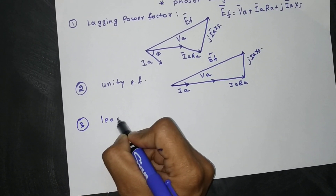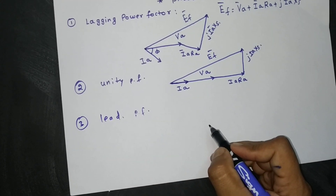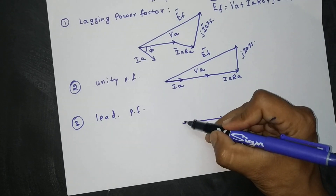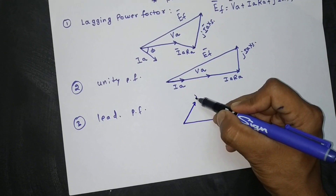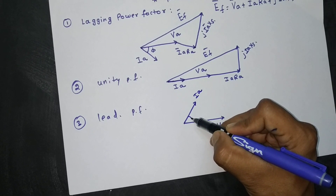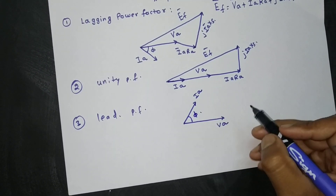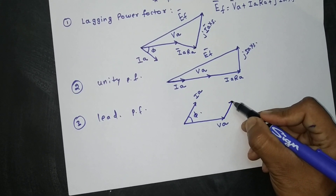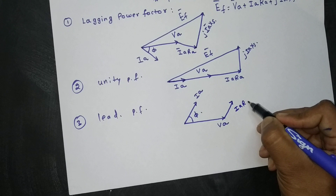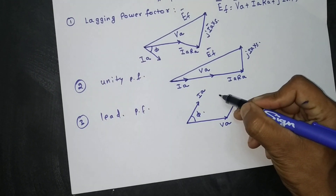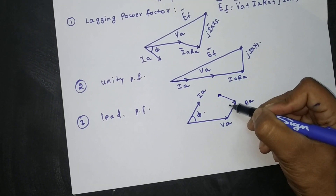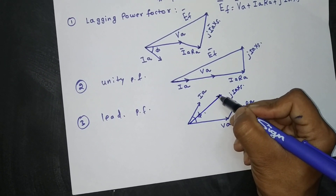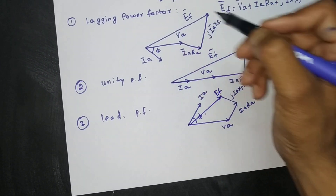The third case is leading power factor. Again we draw VA as reference. In this case IA leads VA by phi. From VA we draw the IA·RA drop, then perpendicular to that is j·IA·Xs, and the resultant is EF.